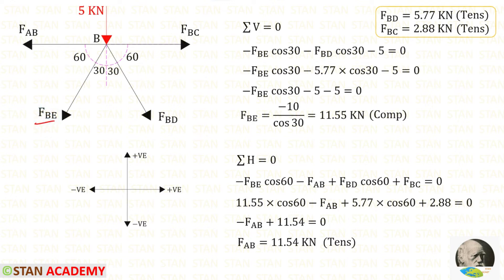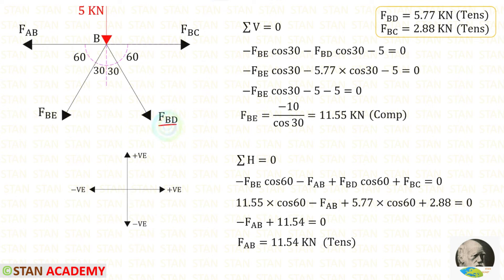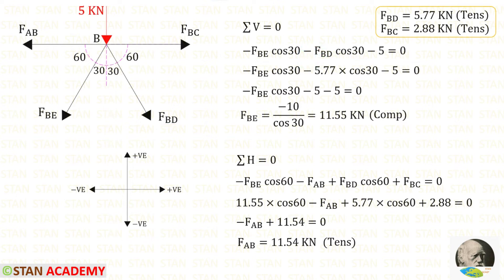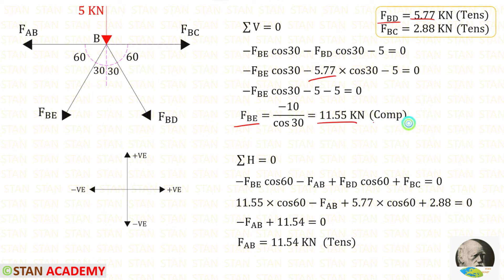FBE is inclined; to make it vertical we need 30 degrees, so we multiply FBE with cos 30. When we make it vertical it will be acting downwards, so it should be applied as negative. The load of 5 kN is also acting downwards, so it is also negative. We apply the known value of FBE. Finally for FBE we will get a negative value, meaning it is compressive.